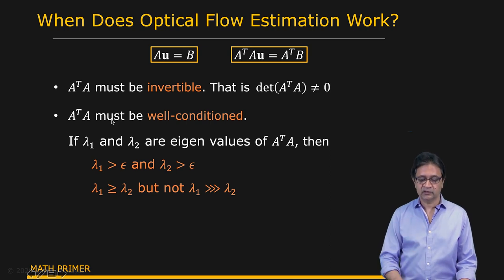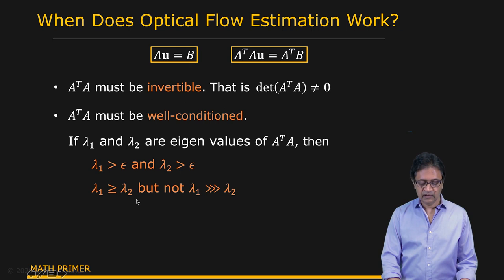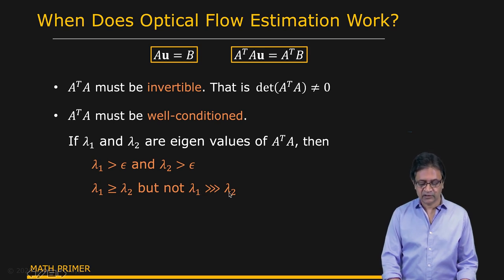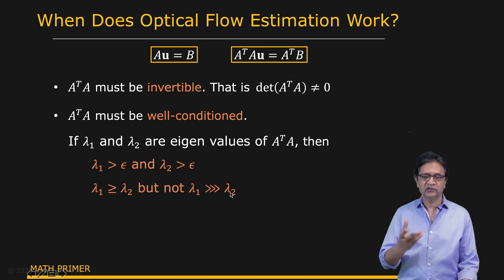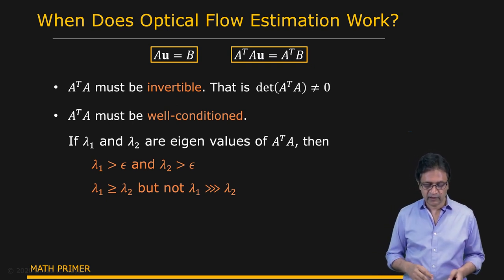And when is A transpose A well-conditioned? When the eigenvalues—remember, this is a two by two matrix—the two eigenvalues, lambda one and lambda two, both are significant enough. Neither one is close to zero and you can have one greater than the other, which will often happen, but one cannot be significantly larger than the other one. So let's sort of visually take a look at how this manifests in real images and what's really going on here in terms of this matrix A transpose A.